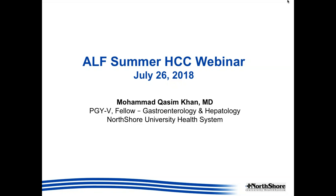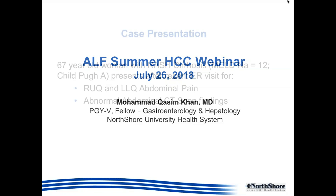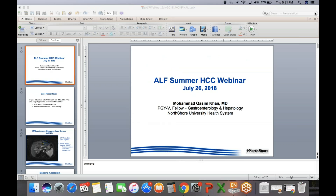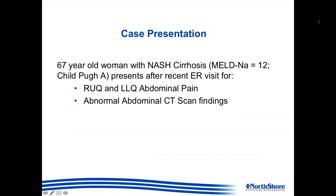We'll get started — we have a great learning case for you today, and we'll begin with a case presentation. We present a case of a 67-year-old woman with a history of NASH cirrhosis, a MELD-sodium score of 12, and Child-Pugh classification of A, who presents to the clinic after a recent ER visit where she was complaining of right upper quadrant and left lower quadrant abdominal pain. During her ER evaluation she had a CT scan which showed some concerning abnormal abdominal findings.